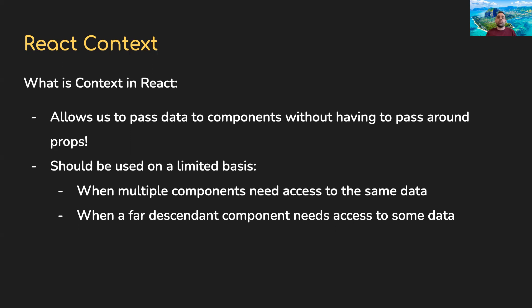That's another reason context might be useful — a deeply nested grandchild component can just reach into the context and get the data directly. The app would set the context, and then the deep grandchild would just use the context. Does that concept make sense?